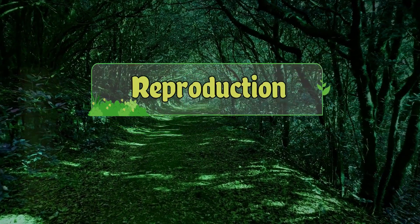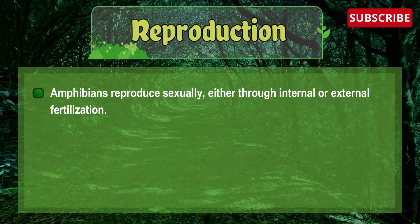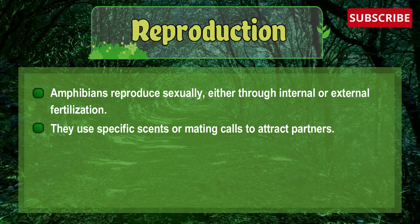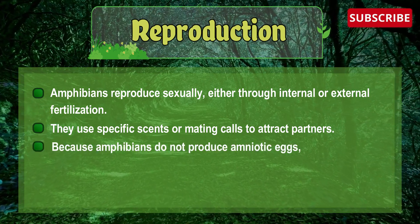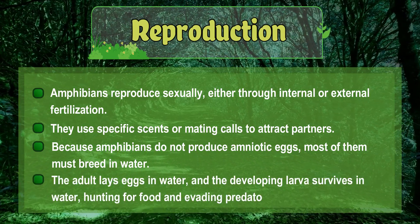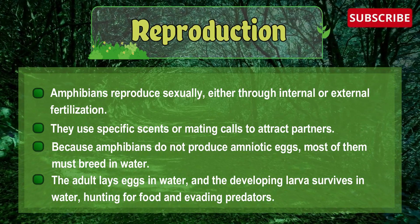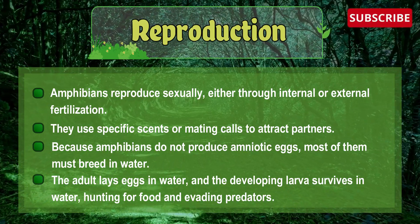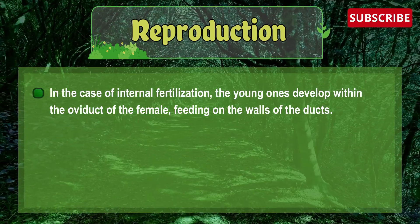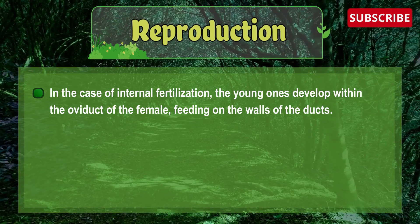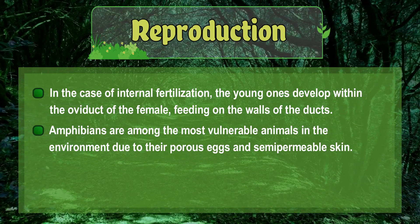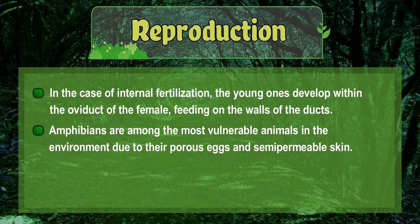Amphibians reproduce sexually either through internal or external fertilization. They use specific scents or mating calls to attract partners. Because amphibians do not produce amniotic eggs, most of them breed in water. The adult lays eggs in water, and the developing larva survives in water, hunting for food and evading predators. In the case of internal fertilization, the young ones dwell within the oviduct of a female, feeding on the walls of the ducts. Amphibians are among the most vulnerable animals due to their porous eggs and semi-permeable skin.